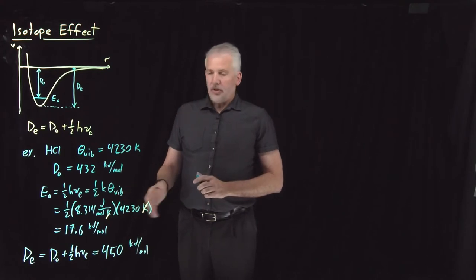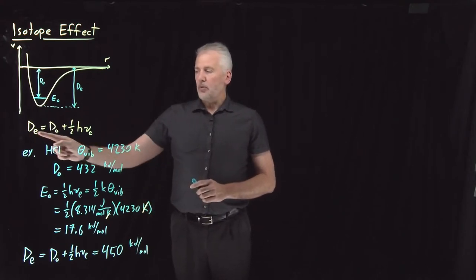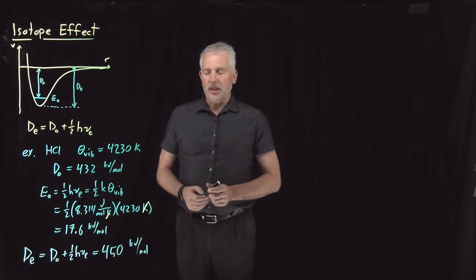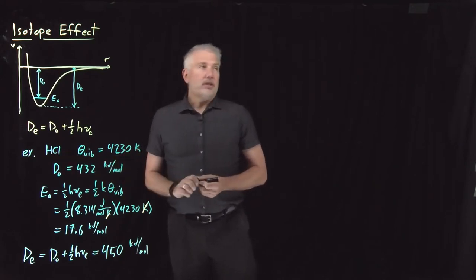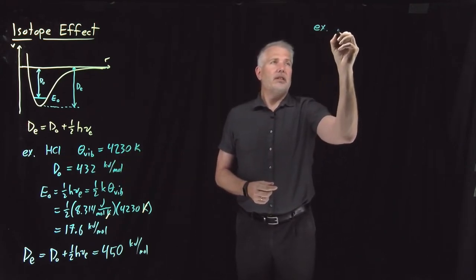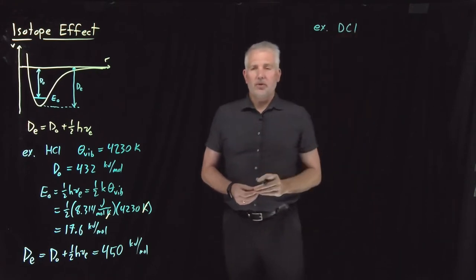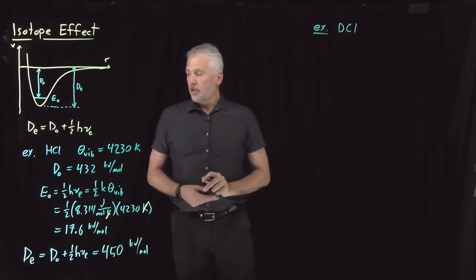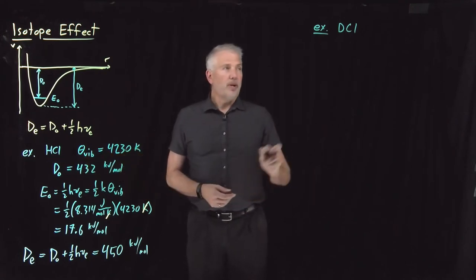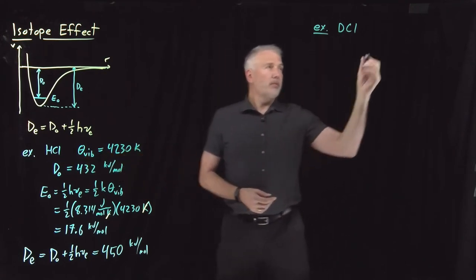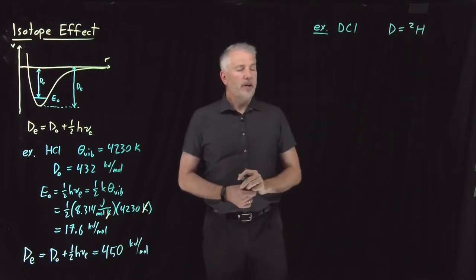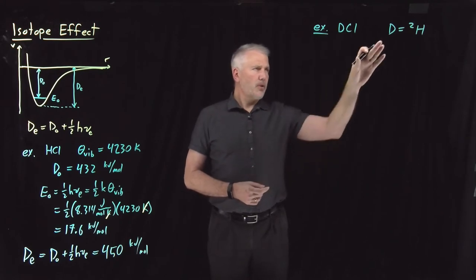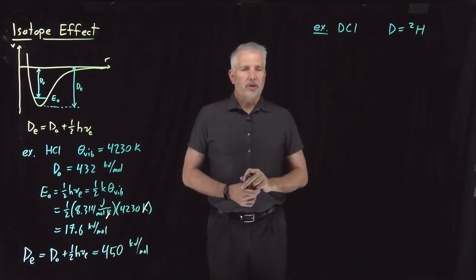But that's not actually the most interesting thing about this difference between these two types of bond dissociation energy. It gets even more interesting when we consider the effect that isotopes have. So now, instead of talking about HCl, let's suppose we're interested in an isotopic variant of that molecule — not H, but D, deuterium, the heavy isotope of hydrogen, a mass 2 isotope of hydrogen.